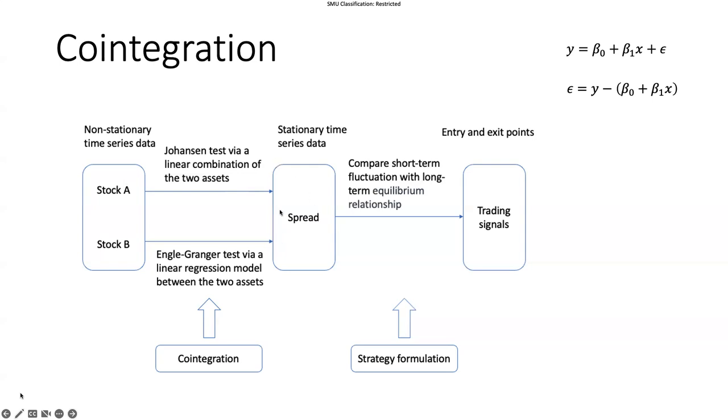Based on these two tests, we will have a time series called a spread, and this spread is supposed to be stationary because we will use other tests, for example the augmented Dickey-Fuller (ADF) test, to test the stationarity of these series and set some threshold. If it passes the threshold, then it is stationary with certain statistical significance. Based on these spreads, we will then compare the short-term fluctuations with the long-term equilibrium relationship to see if there's a temporary market fluctuation. This is where we formulate a strategy and generate the trading signals, specifically in terms of the entry and exit points.